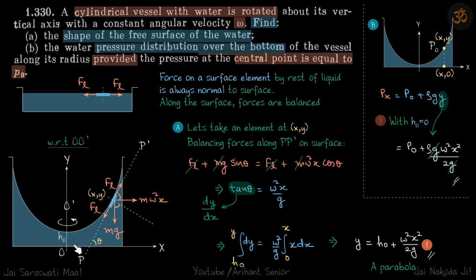We take x and y coordinates to find the equation of the free surface. Let the bottom center of the vessel be the origin, x the horizontal axis, and y the vertical axis. The element is at point (x, y). Forces on this element: the surface forces FL are balanced; there is mg downward and mω²x toward the right — this is a pseudo force in the rotating frame. There is also a normal force from the liquid, but we don't need its value.